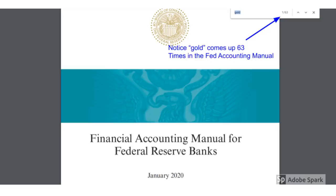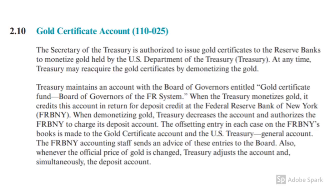Let's go to section 2.10 to get some information that we will need. Section 2.10 states: the Secretary of the Treasury is authorized to issue gold certificates to the reserve banks to monetize gold held by the U.S. Department of Treasury. At any time, Treasury may reacquire the gold certificates by demonetizing the gold. Treasury maintains an account with the Board of Governors entitled Gold Certificates Fund, Board of Governors of the Federal Reserve System. When the Treasury monetizes gold, it credits this account in return for deposit credit at the Federal Reserve Bank of New York. When demonetizing gold, Treasury decreases the account and authorizes the Federal Reserve Bank of New York to charge its deposit account. The offsetting entry in each case on the Federal Reserve Bank of New York's books is made to the gold certificate account and the U.S. Treasury General account. The Federal Reserve Bank of New York's accounting staff sends an advice of these entries to the Board.